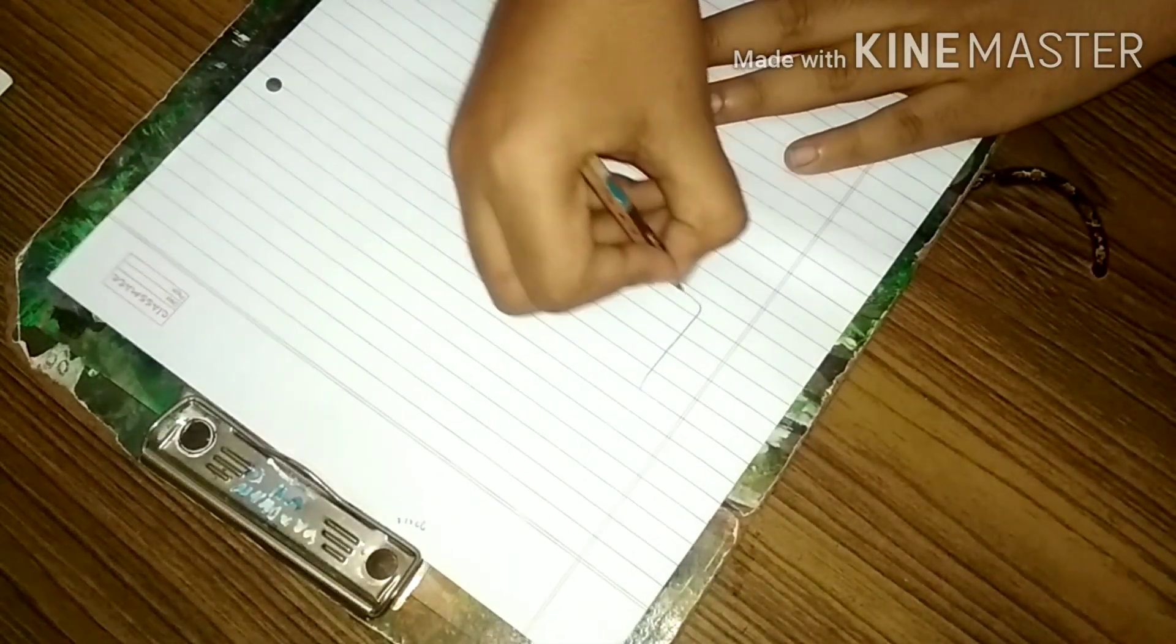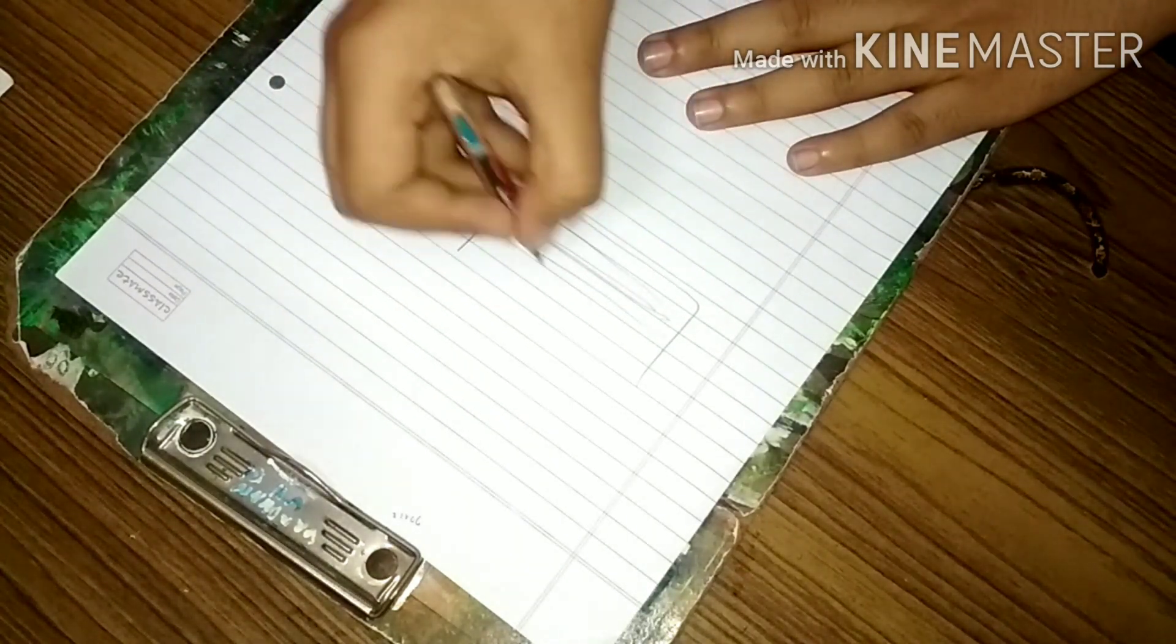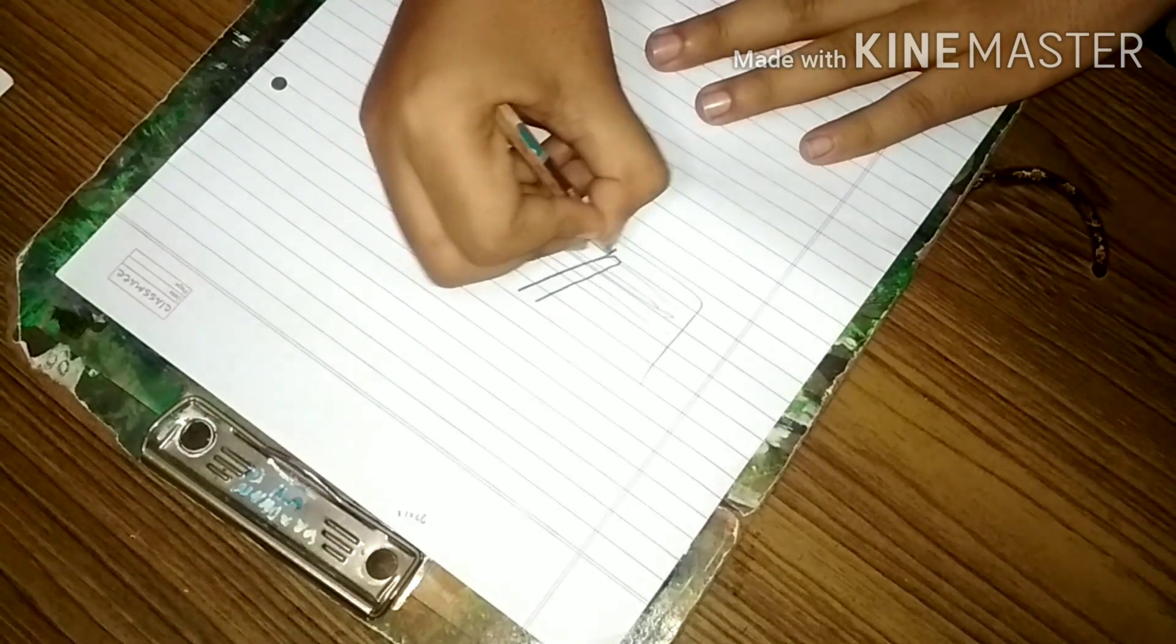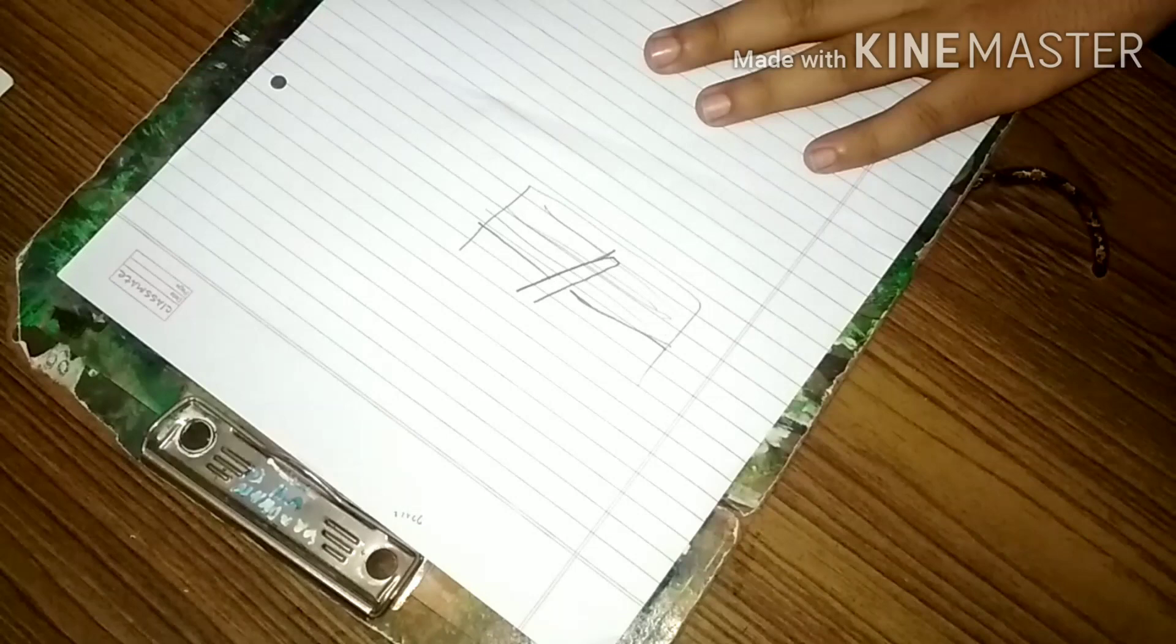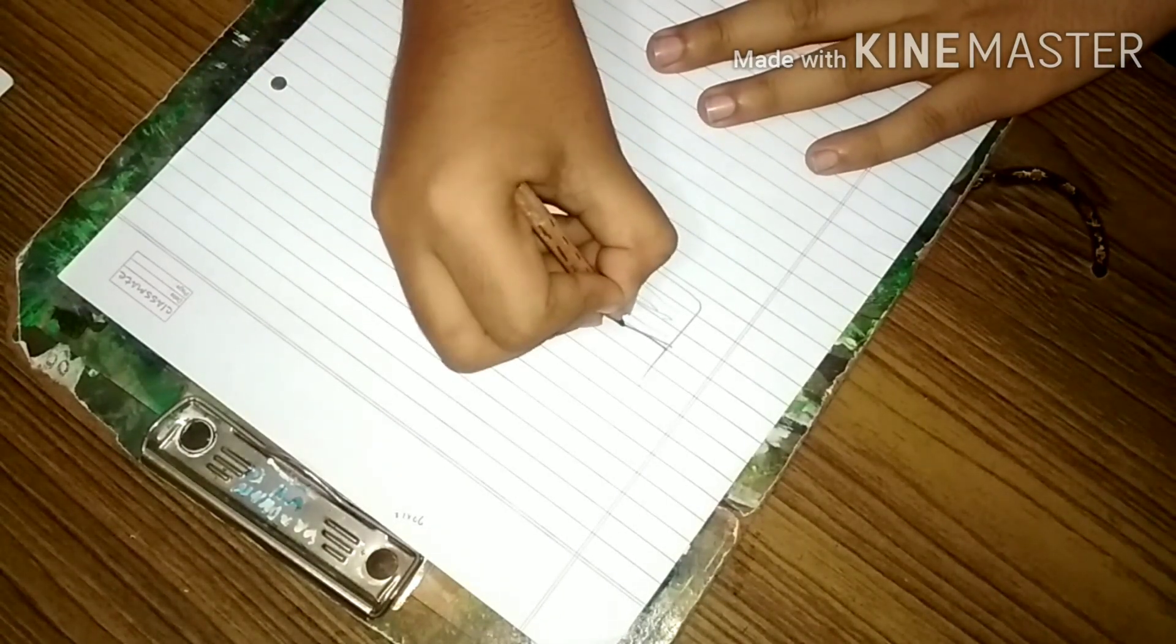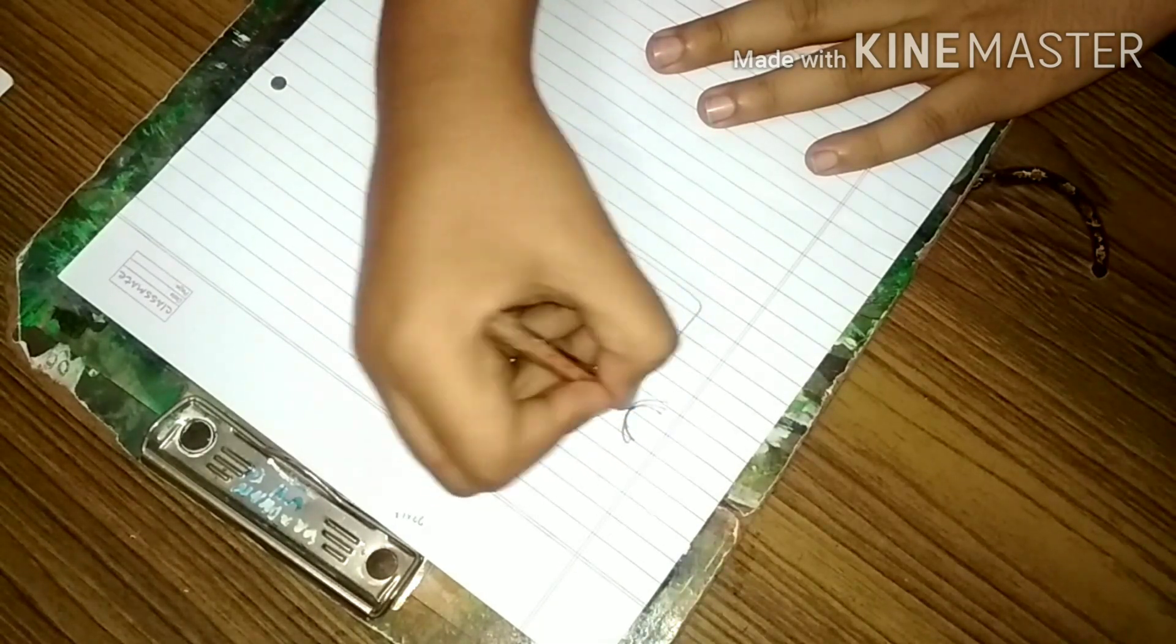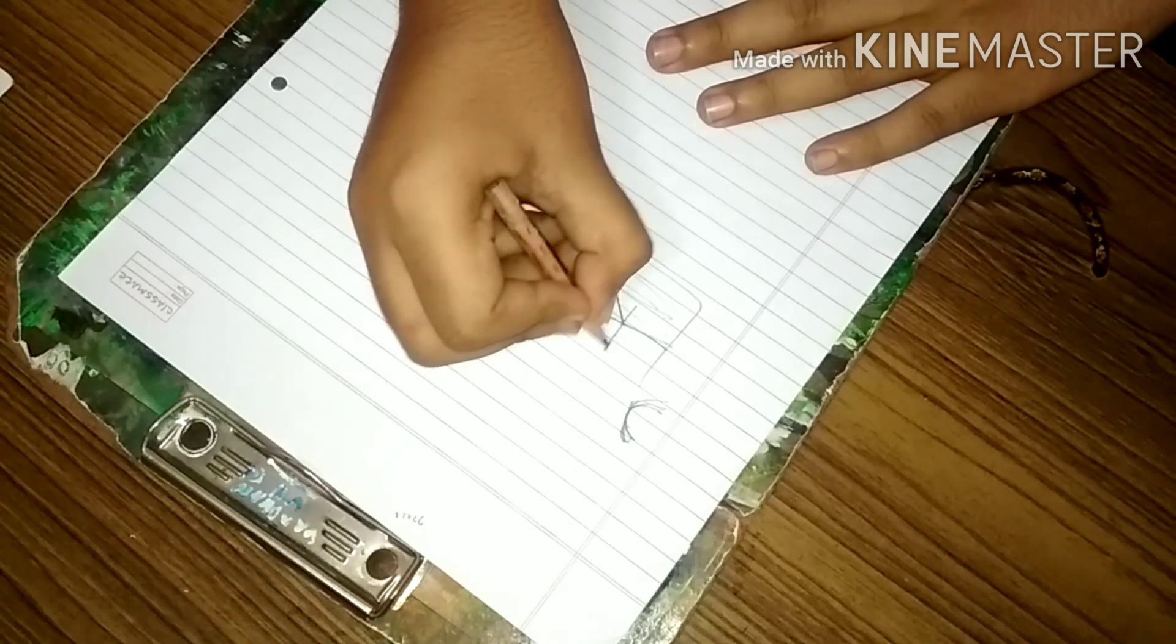So this is my mug and this is water. When I put my pencil like this, and this is my water, okay? When I put my pencil like this, the light rays are going like this. And think like here is my observer.